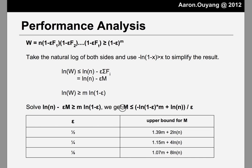Here is finally what we get: M can be bounded by some constant times m, where that constant is a function of epsilon. Plugging in numbers: if epsilon is 1/2, the constant before m is 1.39; if epsilon is 1/4, it decreases to 1.15; and if epsilon is 1/8, it is even closer to 1, specifically 1.07. As epsilon decreases, the constant before m approaches 1, which indicates that our randomized algorithm performs almost as well as the best expert.